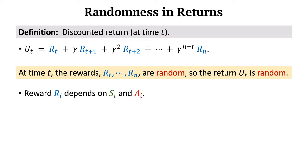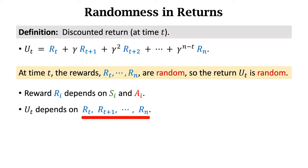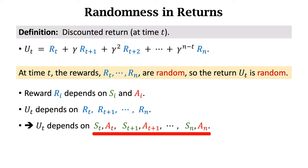We discussed that reward Ri depends on state Si and action Ai. As the weighted sum of rewards, return UT depends on RT to Rn. Therefore, UT depends on all states and actions from time t—including St,At, St+1,At+1, through Sn,An. If any of these states and actions is random, then return UT is random.